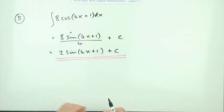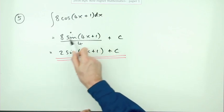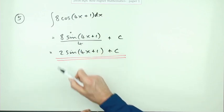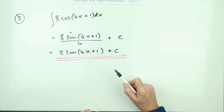And the second one was for dividing by the derivative of the inside function and simplifying it. If you just left it like this, you wouldn't get the second mark.